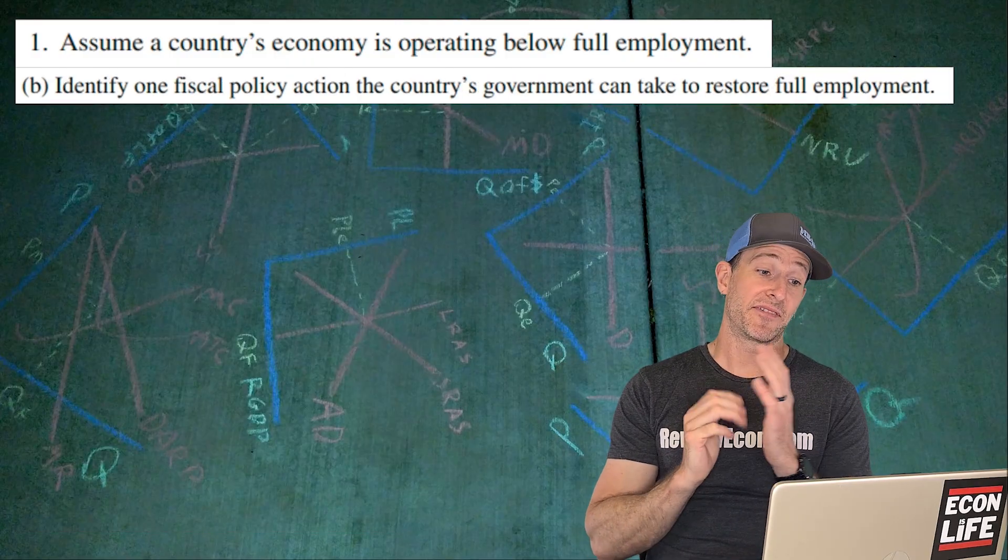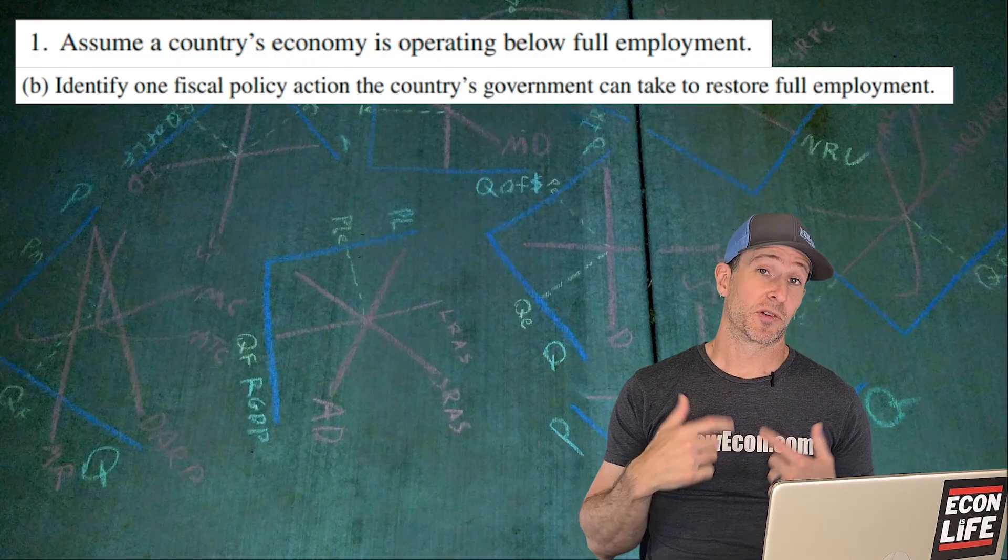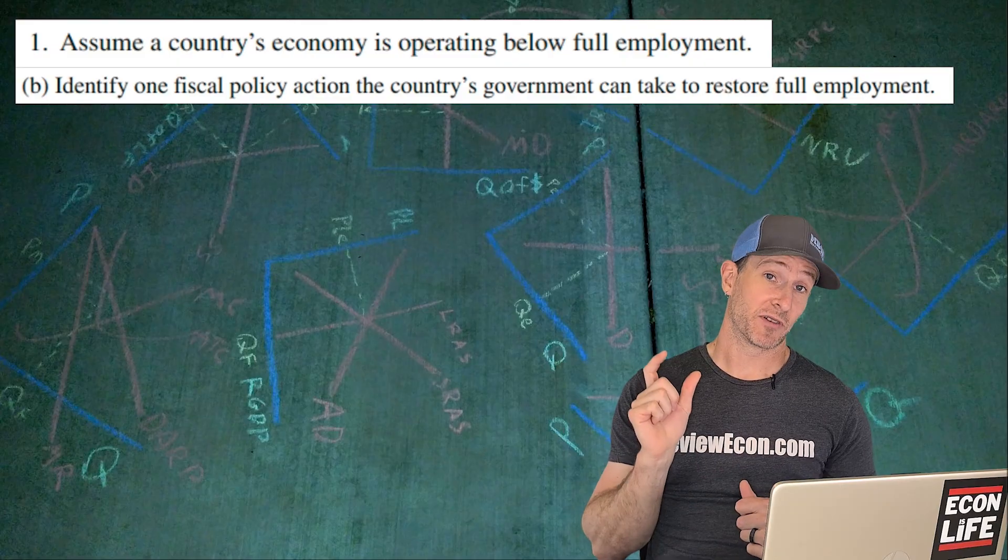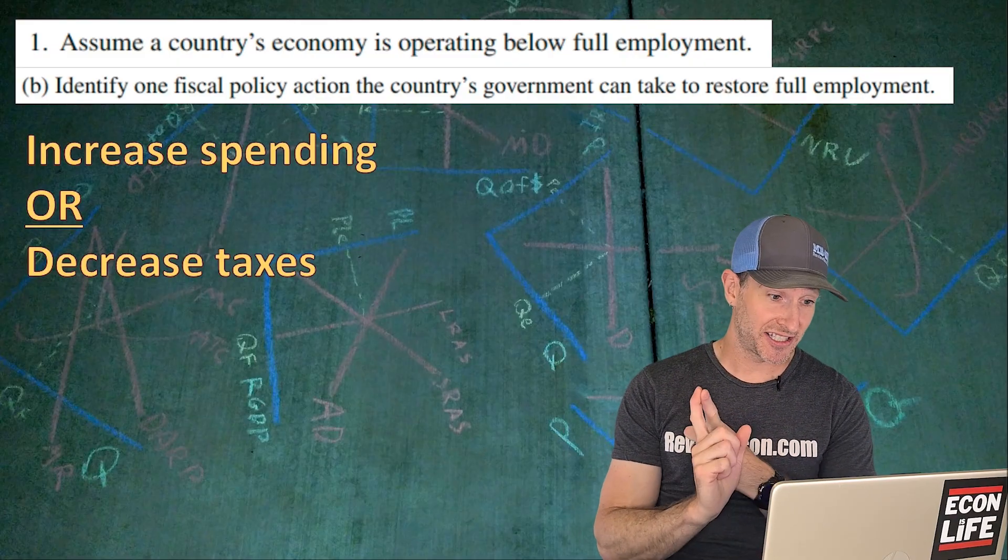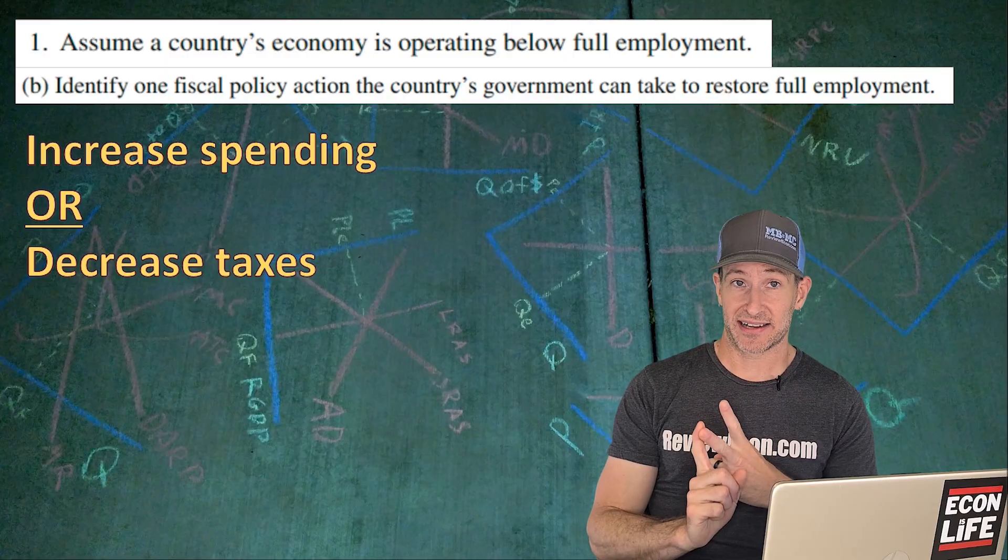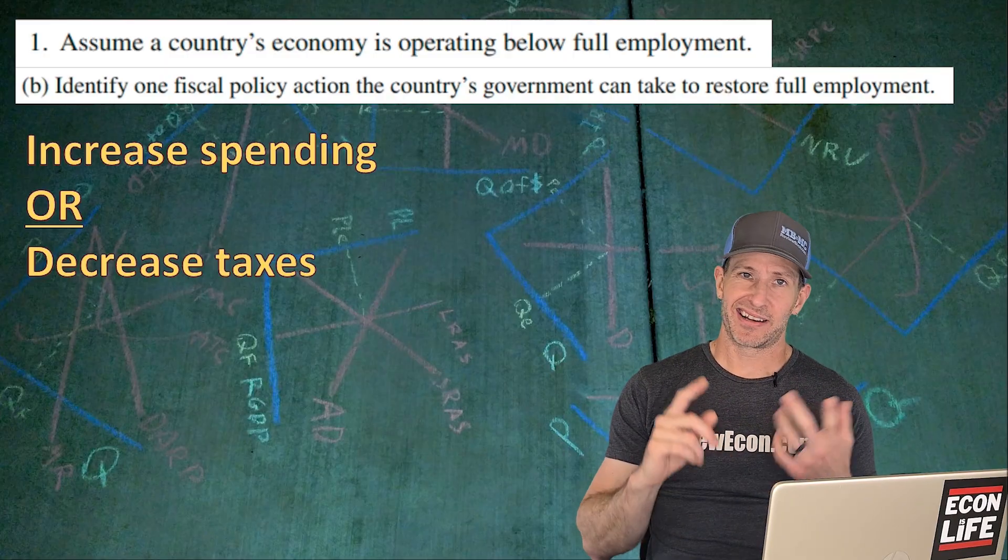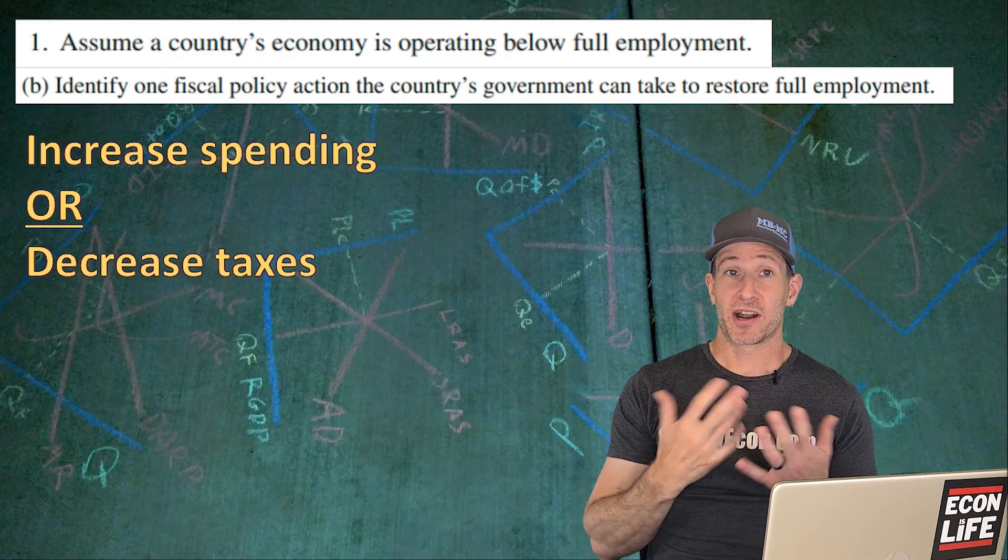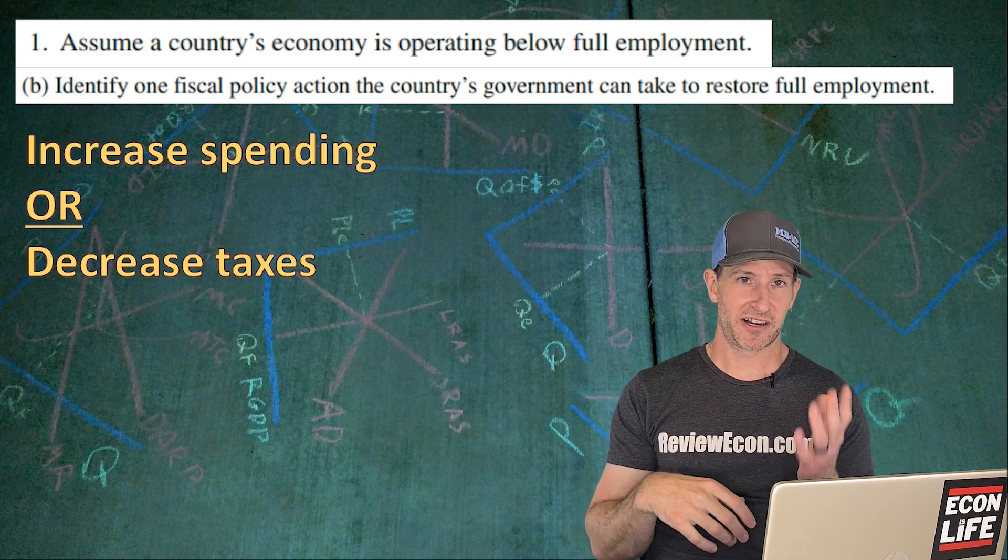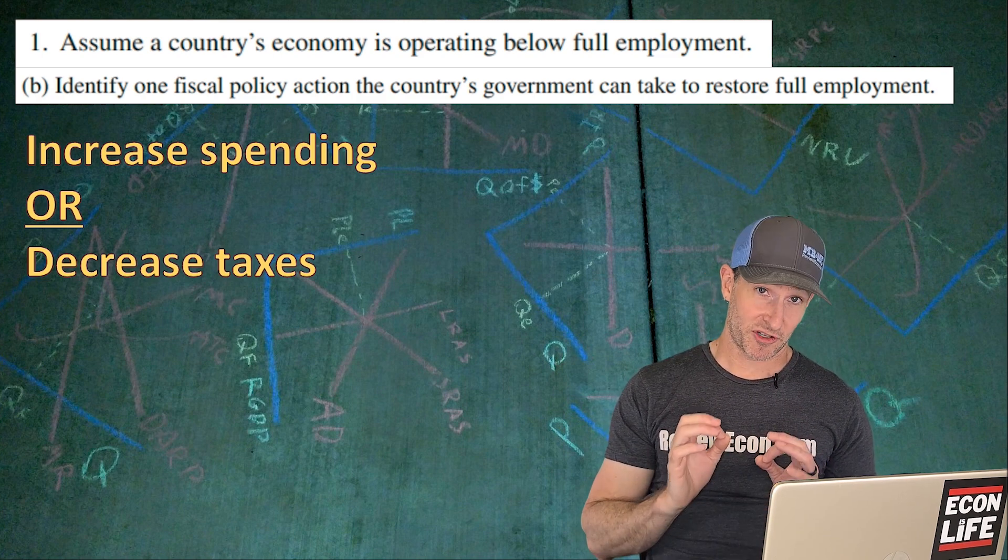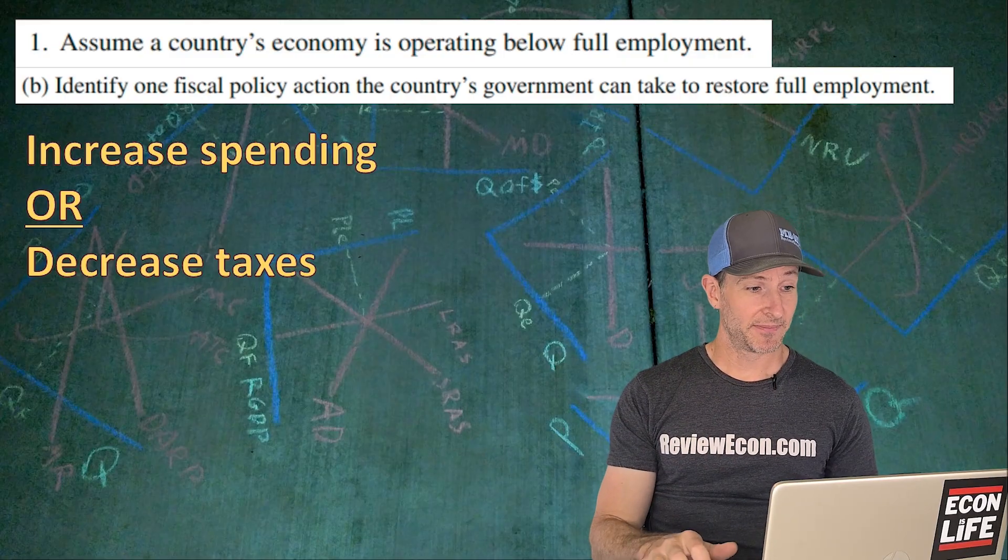Next question, we have to identify a fiscal policy action that could restore full employment. Since we have a recessionary gap, there are two possible answers: increasing spending or decreasing taxes. Nothing regarding monetary policy. That's not what they're looking for here. This is fiscal policy action only, which is taxes and spending.